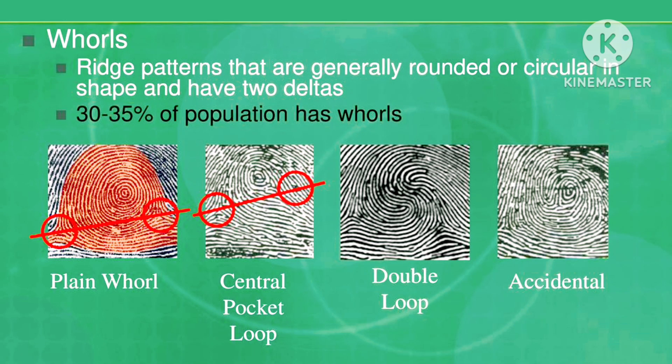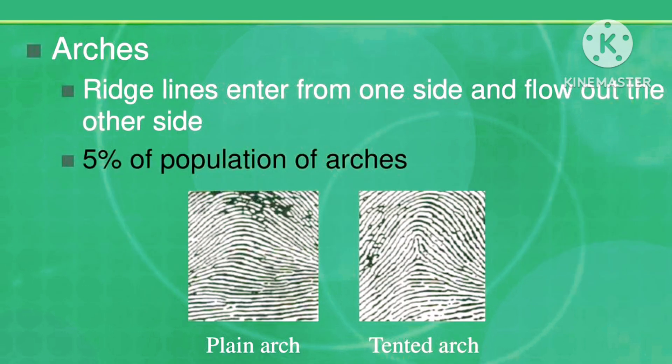Whorls are ridge patterns that are generally rounded or circular in shape and have two deltas. 30 to 35% of the population has whorls. Arches: ridge lines enter from one side and flow out the other side.